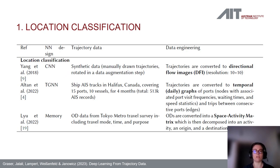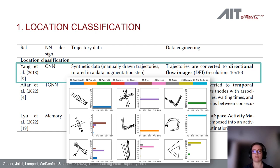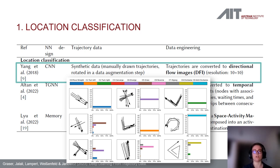The first use case is location classification. Young et al. classify regions based on common movement patterns observed in that region. They used synthetic data — manually drawn trajectories augmented by rotation — and converted the trajectories into directional flow images with a resolution of just 10 by 10 pixels, then fed them into a convolutional neural network for a location classification task.